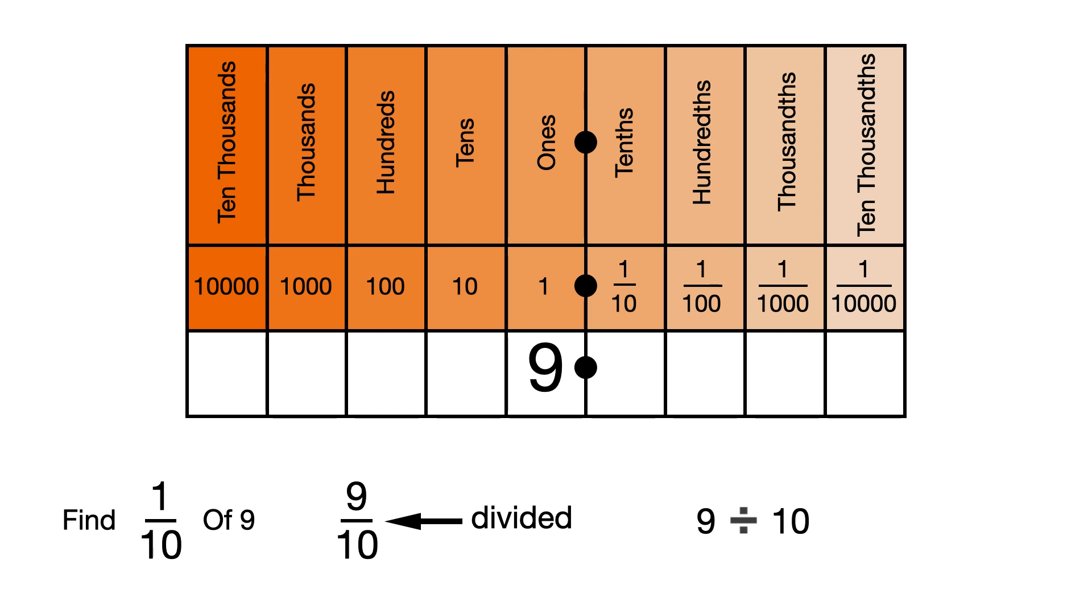To find 1 tenth of 9, we move the 9 one place to the right. And we can see that 9 divided by 10, or 1 tenth of 9, is 0.9.